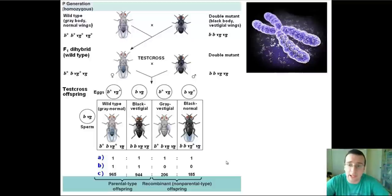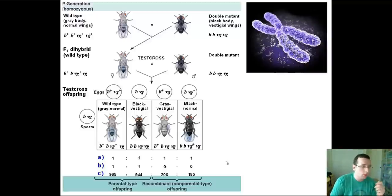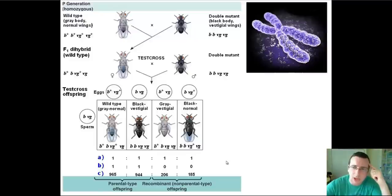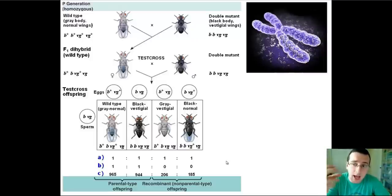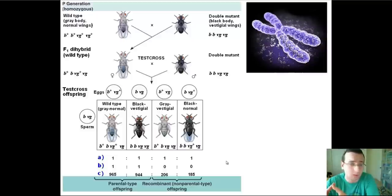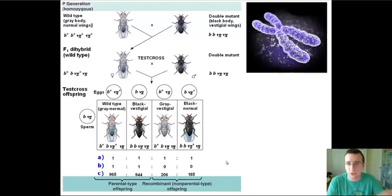Ironically, Morgan did not find the complete linkage he was expecting. He found some linkage — most types were parental: 965 were wild type for both traits, 944 were mutant type for both traits. But he also got recombinant types: 206 gray vestigial and 285 black and normal. This raised a question: the majority of flies came out parental-like, meaning the genes are in the same chromosome and traits travel together — like red hair traveling with freckles. But sometimes you get a person with red hair without freckles, and those are the recombinant types.